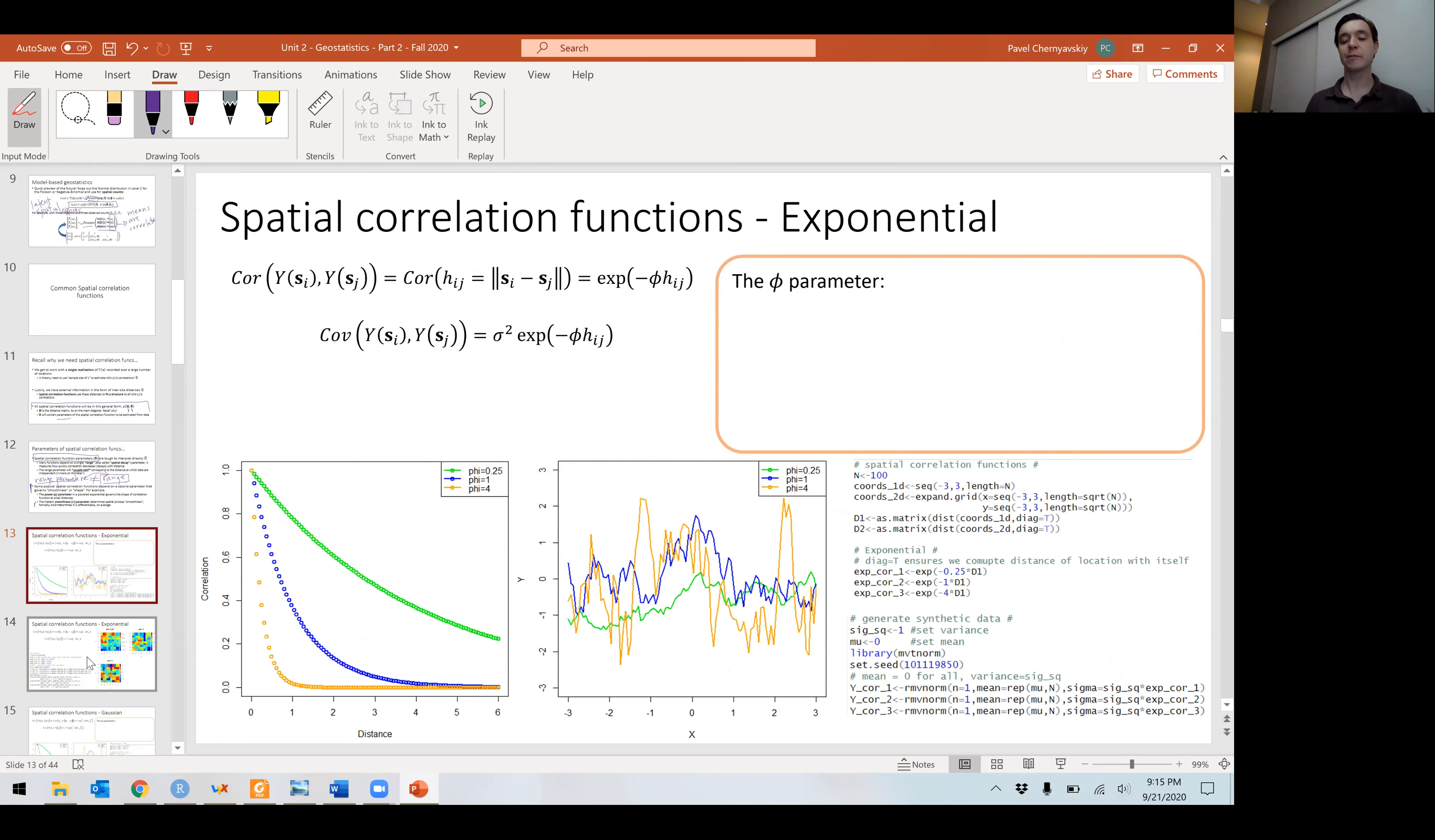I think I'll just say that. Let's just get into an example. Let's go to the zoo. One of the most popular spatial correlation functions is called the exponential. Not the exponential distribution, but this is the exponential spatial correlation function. So for any two observations, we have the correlation as a function of the distance, and here is our function, e to the negative phi times the distance. The covariance is just our correlation function times the variance.